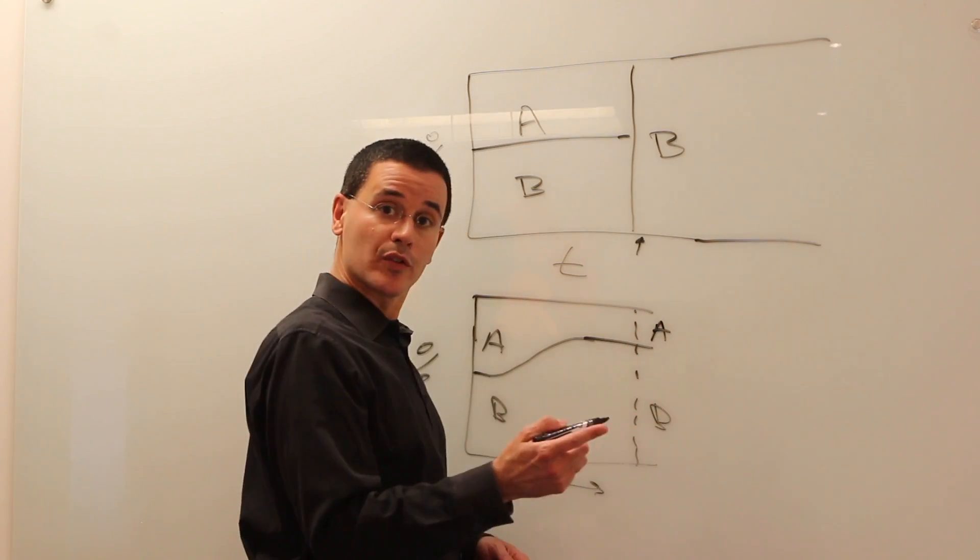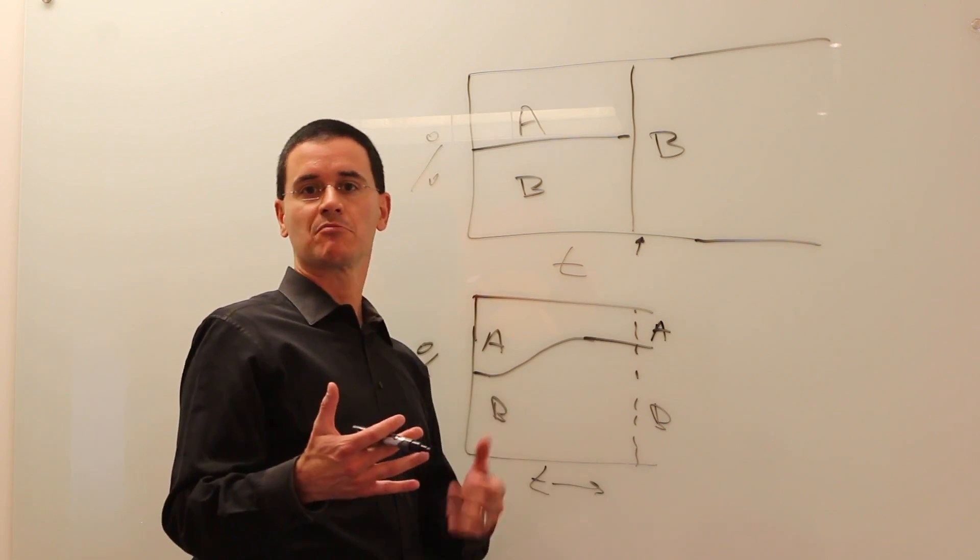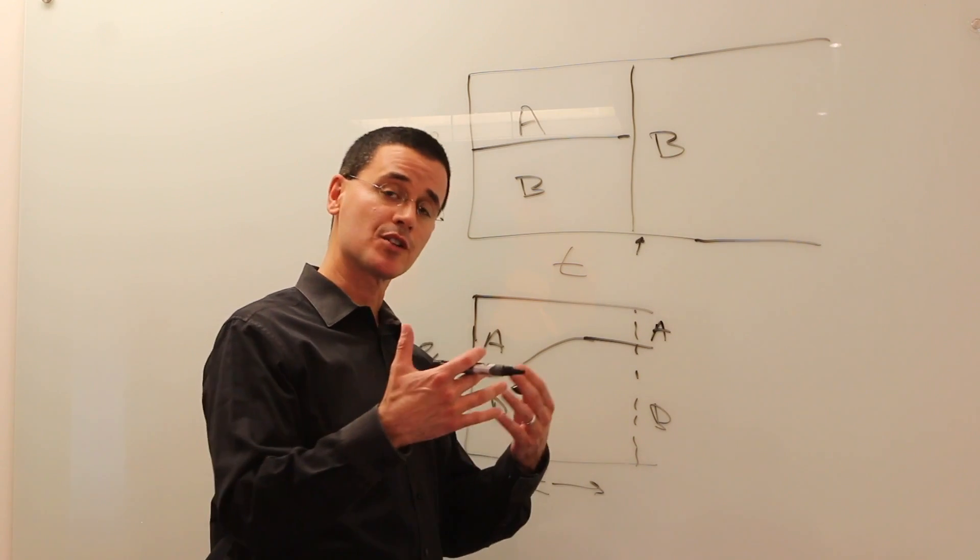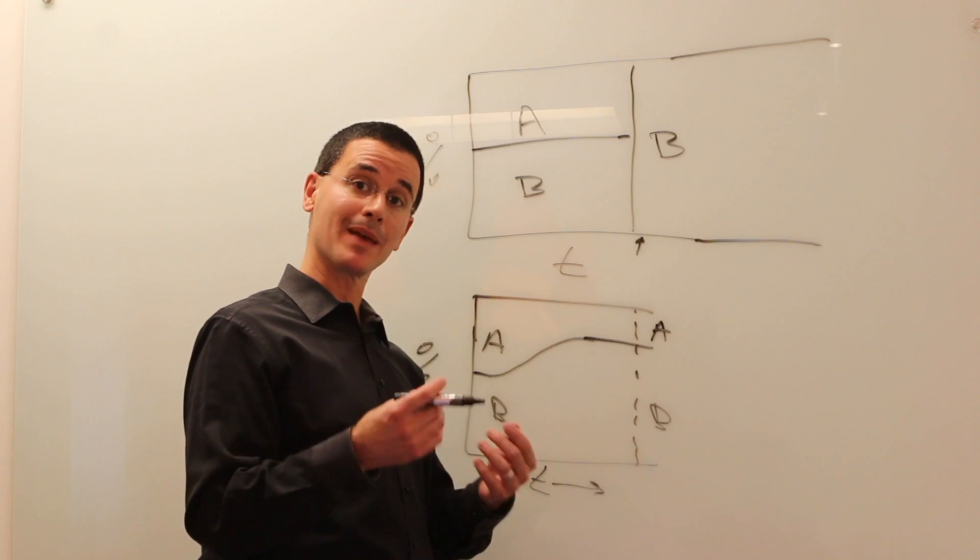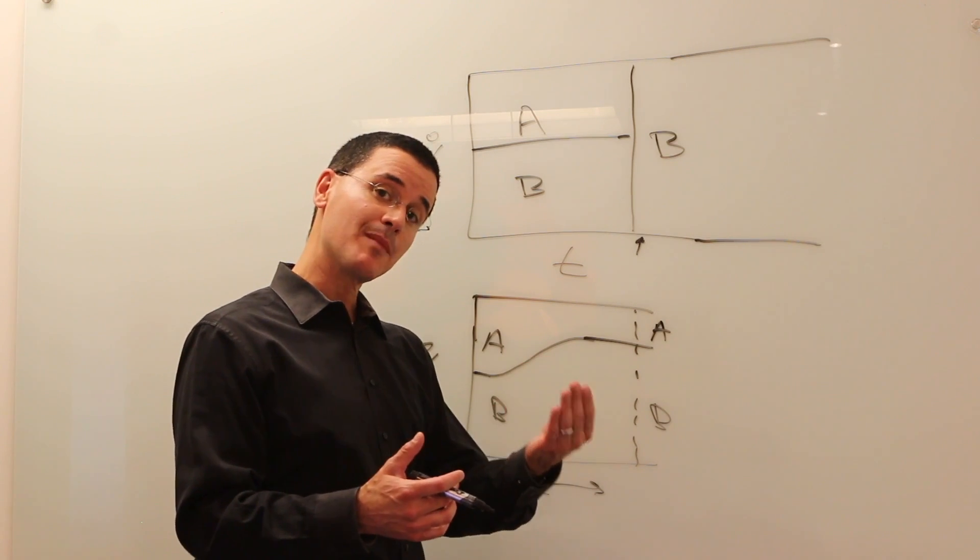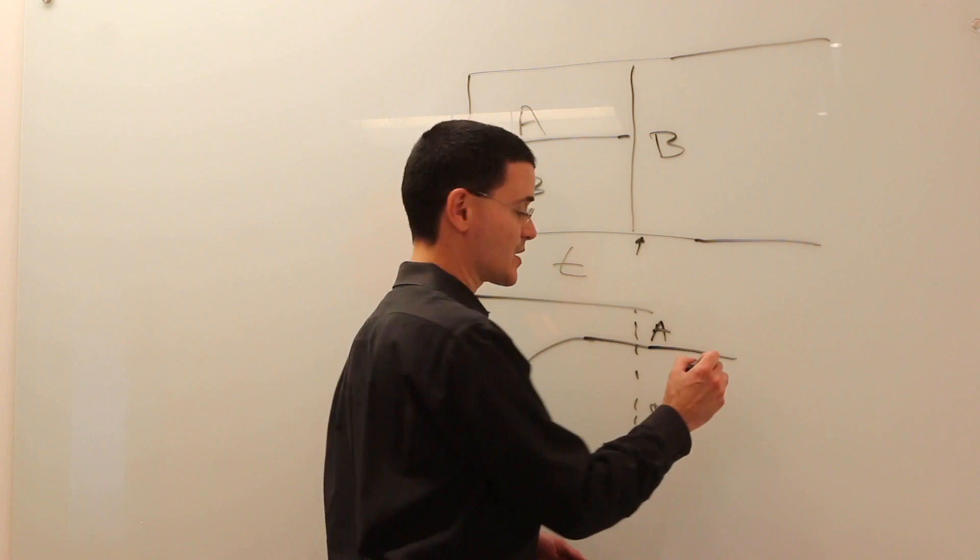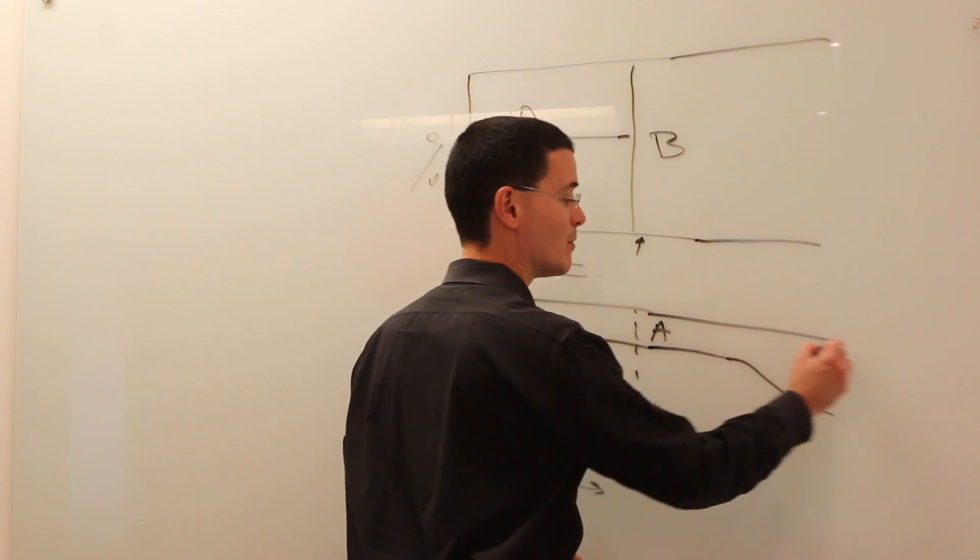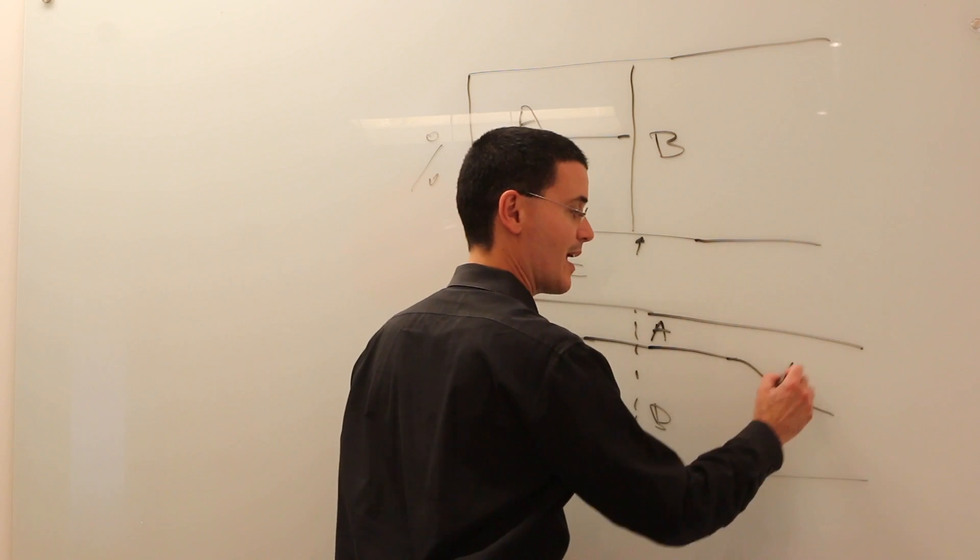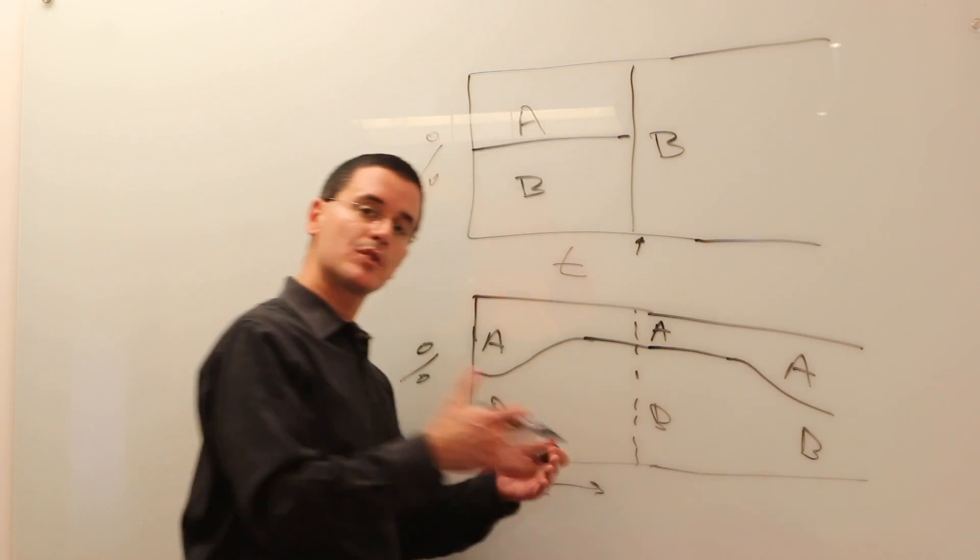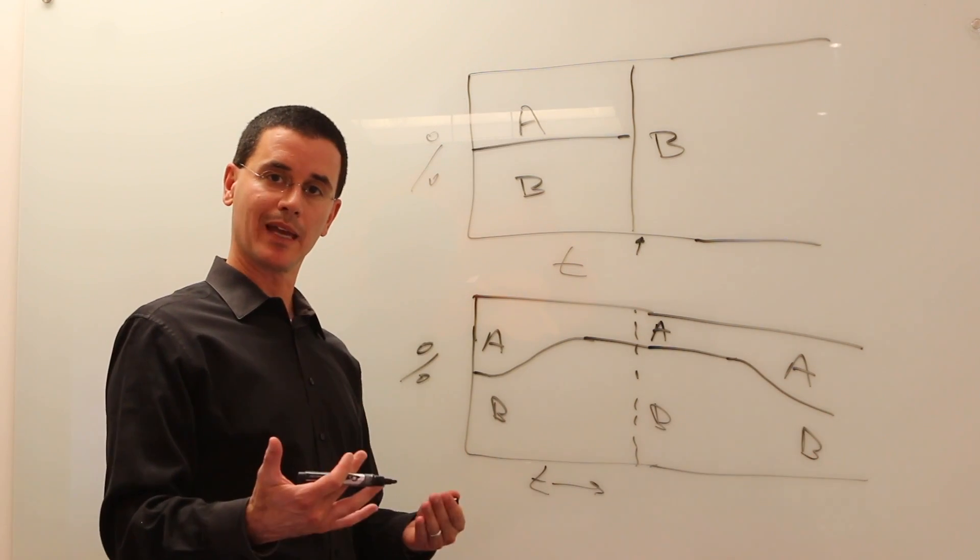Over time, as the world changes, as you change your marketing efforts and start attracting different types of users that behave differently, and maybe for them A is better more often, a predictive personalization system will react to that and start allocating more traffic to A in response to the change in user behavior.